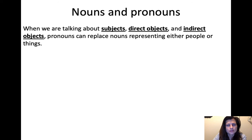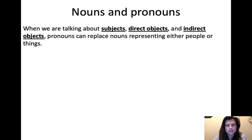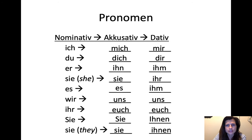So that's what we do when we replace a noun with a pronoun. When we're talking about subjects, direct objects, and indirect objects, pronouns can replace nouns representing either people or things. For subjects, objects, and indirect objects, that's what we would use all these nominatives, accusatives, and datives for.